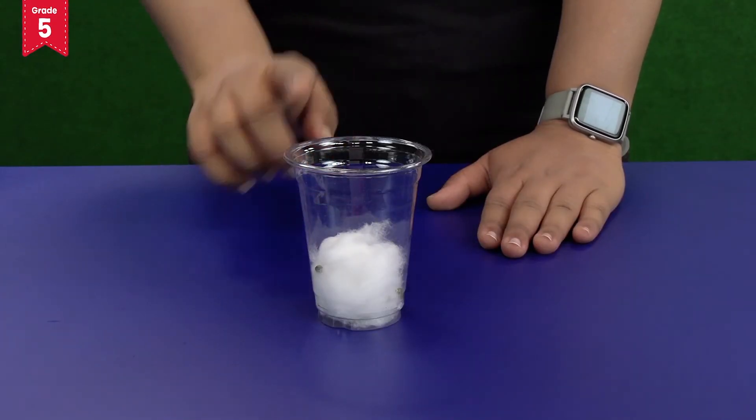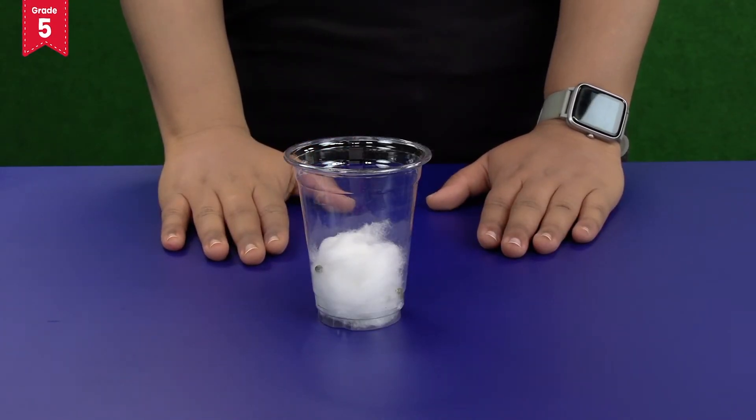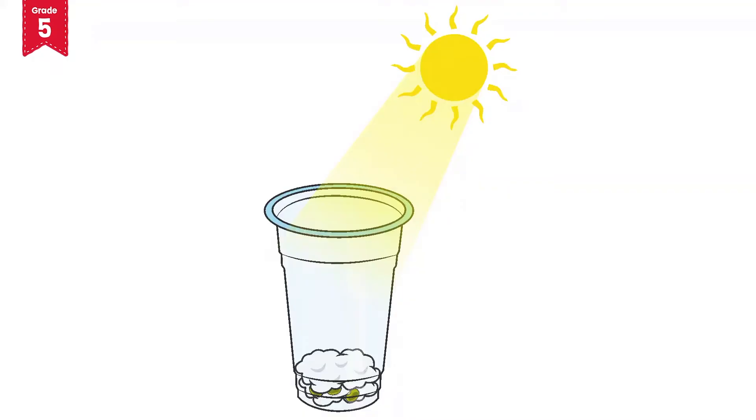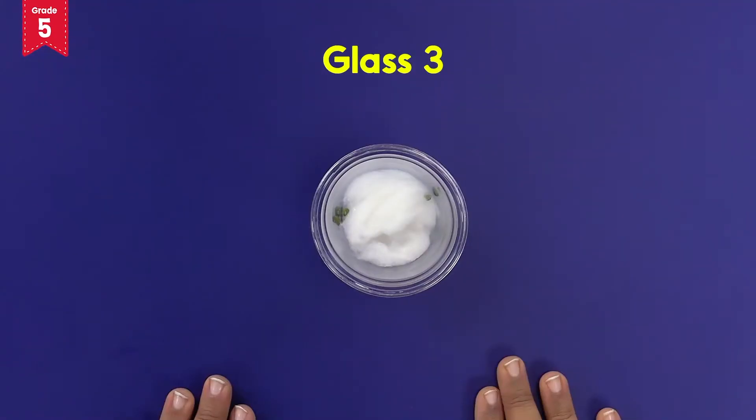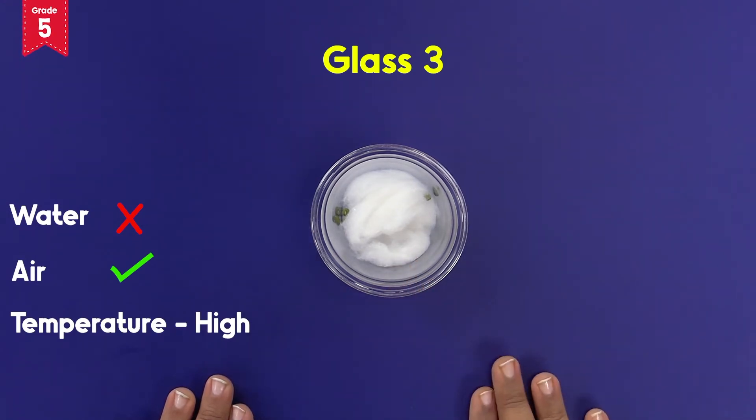Place glass 3 in direct sunlight and do not add any water to it. Here, we are not providing any water but air and high temperature to the seeds in glass 3.